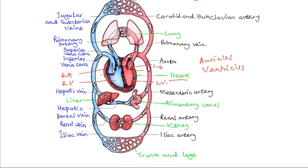Oxygenated blood from the lungs, here are the lungs, enters the left atrium through the pulmonary vein and then into the left ventricle.